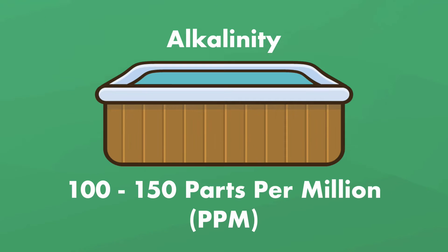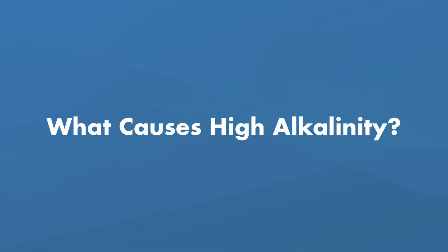We recommend keeping your hot tub alkalinity between 100 and 150 parts per million, or PPM. So what causes high alkalinity in a hot tub?